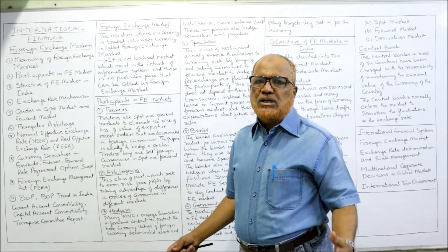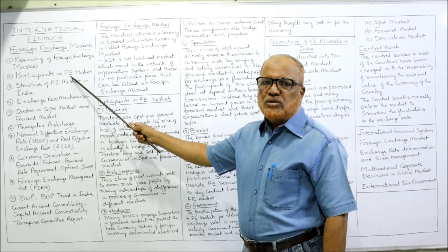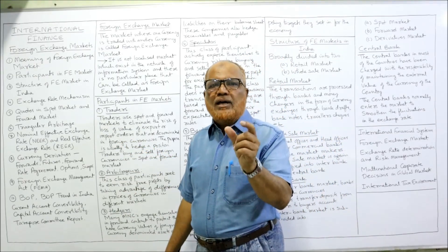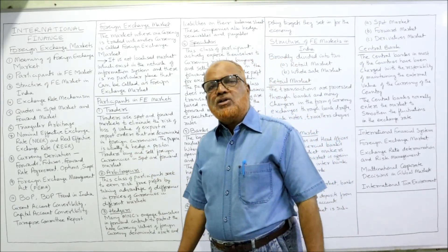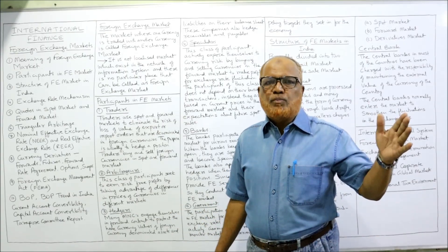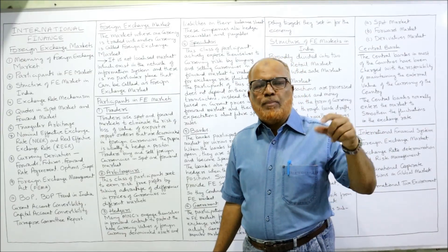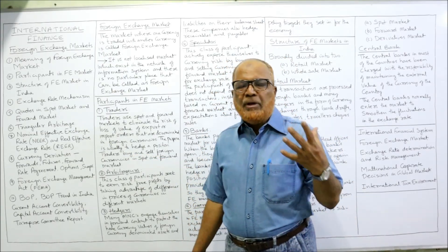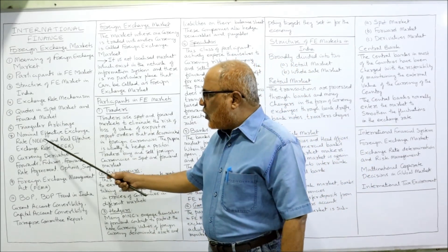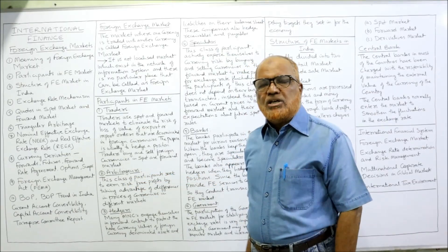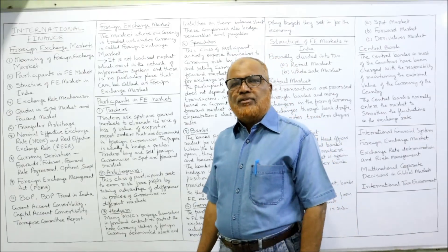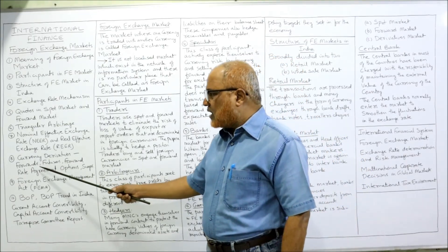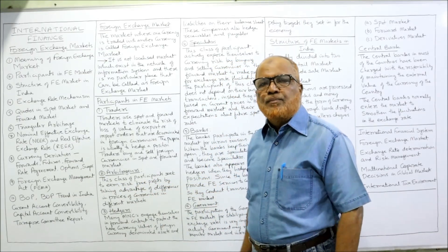In Unit 2, the Foreign Exchange Market, we will study: the meaning of the term foreign exchange market, participants in the foreign exchange market, the structure of the foreign exchange market in India, exchange rate mechanism, and quotes in the spot market and forward market. We'll also cover buying rate and selling rate, triangular arbitrage, the nominal effective exchange rate (NEER), and the real effective exchange rate (REER). Then we have currency derivatives — financial instruments that derive their value from an underlying asset — including forwards, futures, forward rate agreements, options, and swaps.